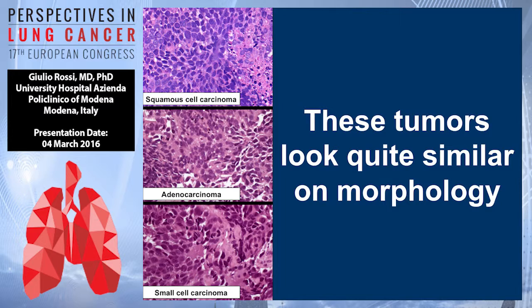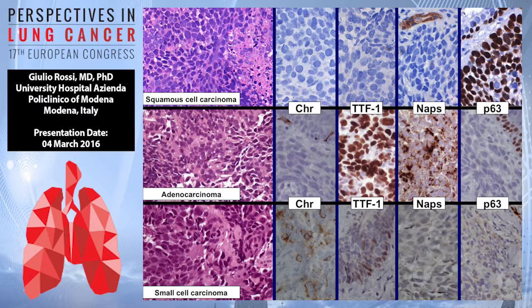For example, it's very difficult on morphology at naked eye to recognize if this is a small cell lung cancer, an adenocarcinoma, or a squamous cell lung cancer. In this case, we have to use immunohistochemistry to discriminate these three main histotypes.